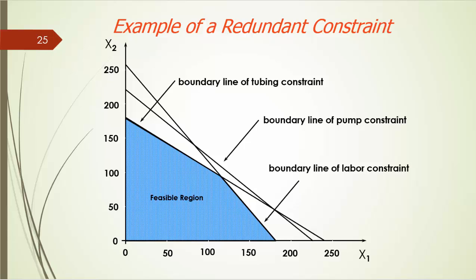A second anomaly we introduce is redundant constraint. Let's say in our Blue Ridge example, it turns out that there are 220 pumps, everything else being the same. The resulting feasible region will be looking like the shaded area on this graph.